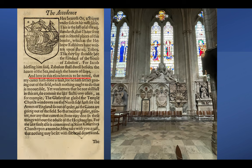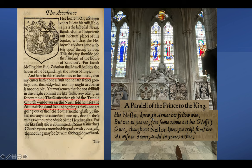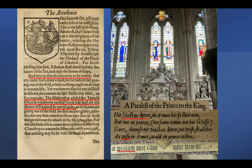The Accedents of Armory — arguably the most important book in this regard — told me to pay attention to whatever was in a specific escutcheon, for example: 'The glazer that glazed the Temple Church windows on the north side hath set the arms of England out of order.' Ben Jonson happens to be buried in the north aisle, and these windows happen to be the northern windows. Within the Execration of Vulcan there is also 'A Parallel of the Prince to the King' — his Nestor knew — Nestor, known for his wisdom.